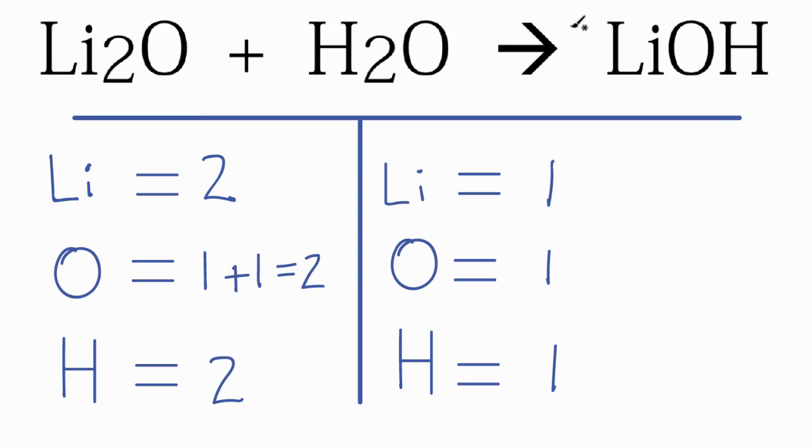So it looks like if we put a two in front of the lithium hydroxide, one times two, that equals two. So the lithiums are balanced. Two times the one oxygen, that gives us two oxygens. Those are balanced. And two times the one hydrogen, that'll give us two hydrogens.